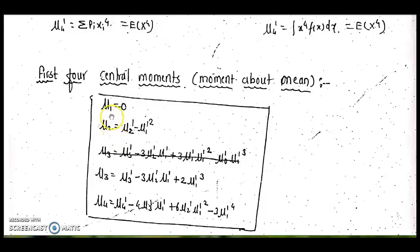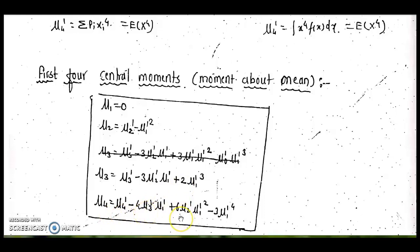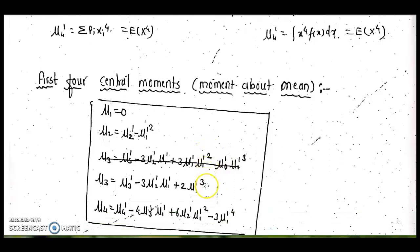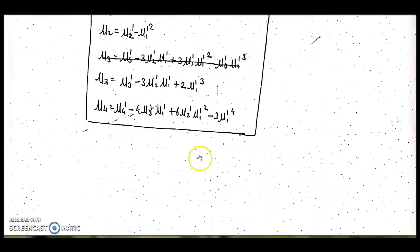The central moment formulas are: mu_1 = 0 (since the mean is at the center), mu_2 = mu_2' − (mu_1')² which is the variance, mu_3 = mu_3' − 3*mu_2'*mu_1' + 2*(mu_1')³, and mu_4 = mu_4' − 4*mu_3'*mu_1' + 6*mu_2'*(mu_1')² − 3*(mu_1')⁴. This shows that if raw moments are known, central moments can be obtained.